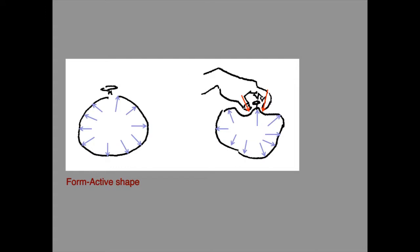A toy balloon, for example, is made from flexible material and the load on it is normally simply a pressure load on the interior exerted by the air that keeps it inflated, which determines its overall form. If the load is changed, such as will occur if the balloon is picked up due to the point loads caused by fingers, the material simply adjusts its geometry to create a new form active shape that allows the new load pattern to be resisted by internal forces that are pure axial tension.